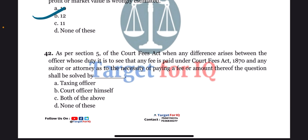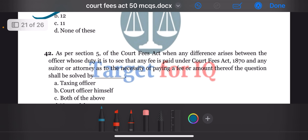Next question: as per section 5 of the act, when any difference arises between the officer whose duty it is to see that any fee is paid under this act and any suitor or attorney as to the necessity of paying a fee or the amount thereof, the question shall be solved by dash. The options are A. Taxing officer, B. Court officer himself, C. Both of the above, or D. None of these. The correct answer is option A. Taxing officer.